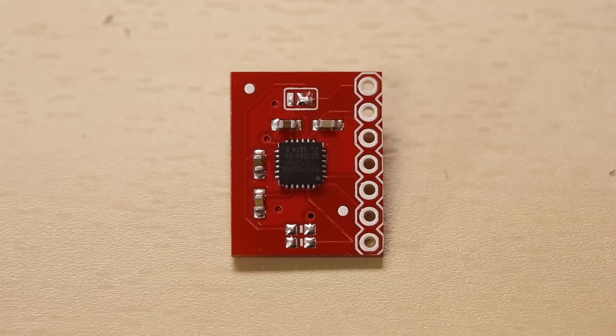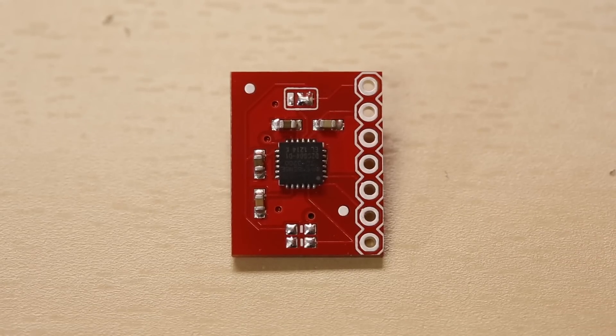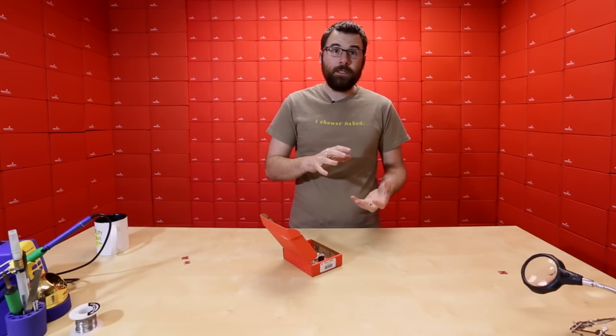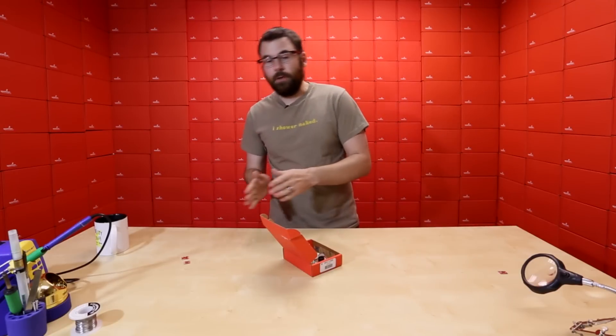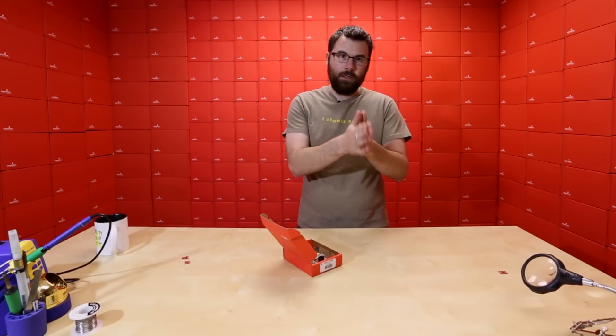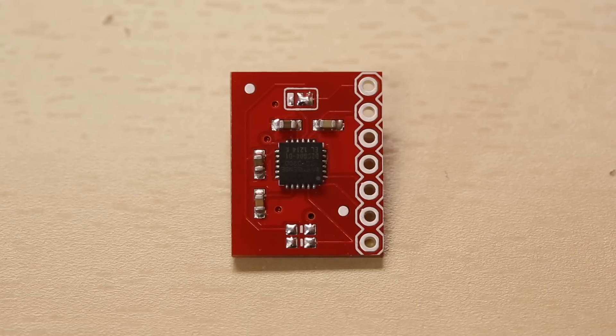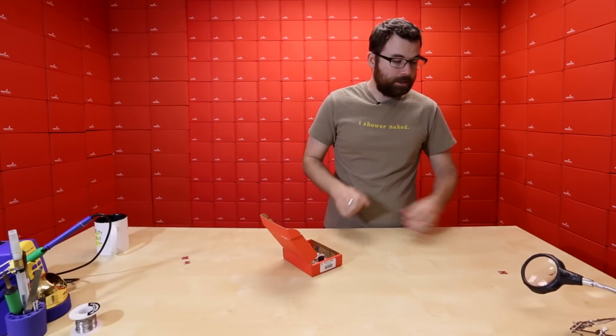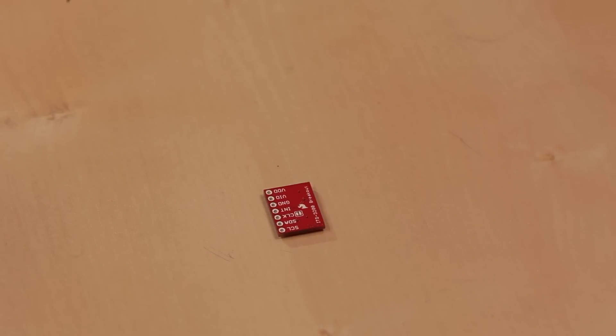Next up, we've got this guy, which is the ITG3200. This is a triple axis gyro. A gyroscope measures angular velocity. So whereas a magnetometer detects where you're positioned in 3D space, this detects your angular velocity in 3D space. It is a triple axis, so it can do all three axes, and it has an I2C interface.